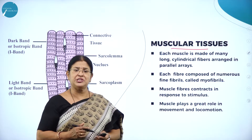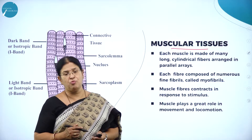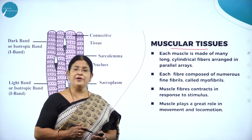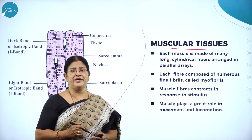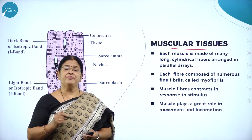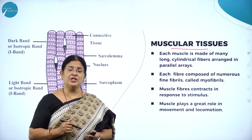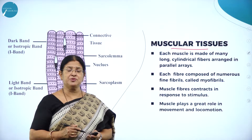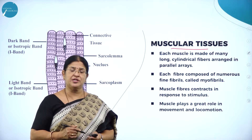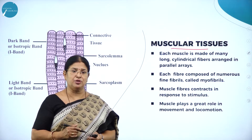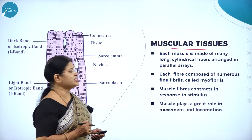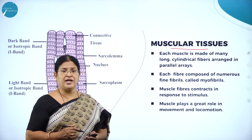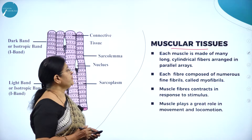Muscular tissues are both voluntary and involuntary. Voluntary tissues are the tissues which are under the control of the will, and involuntary tissues are the tissues which are not under the control of the will. Now let us study about these muscular tissues in detail.